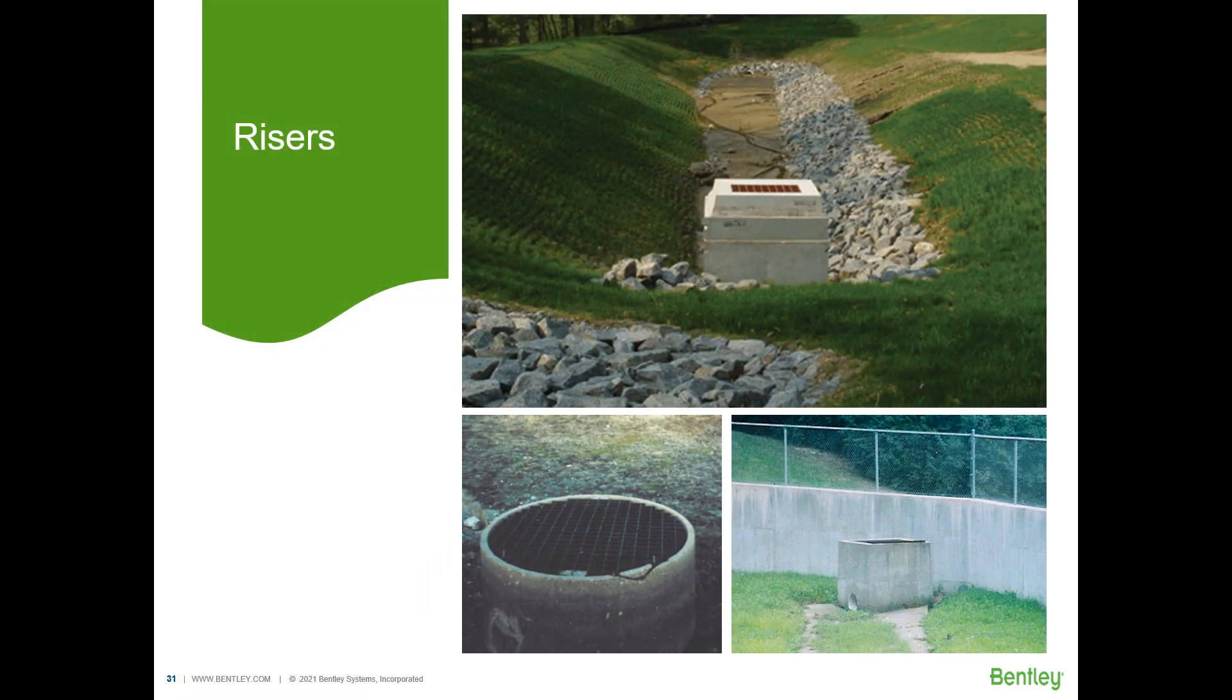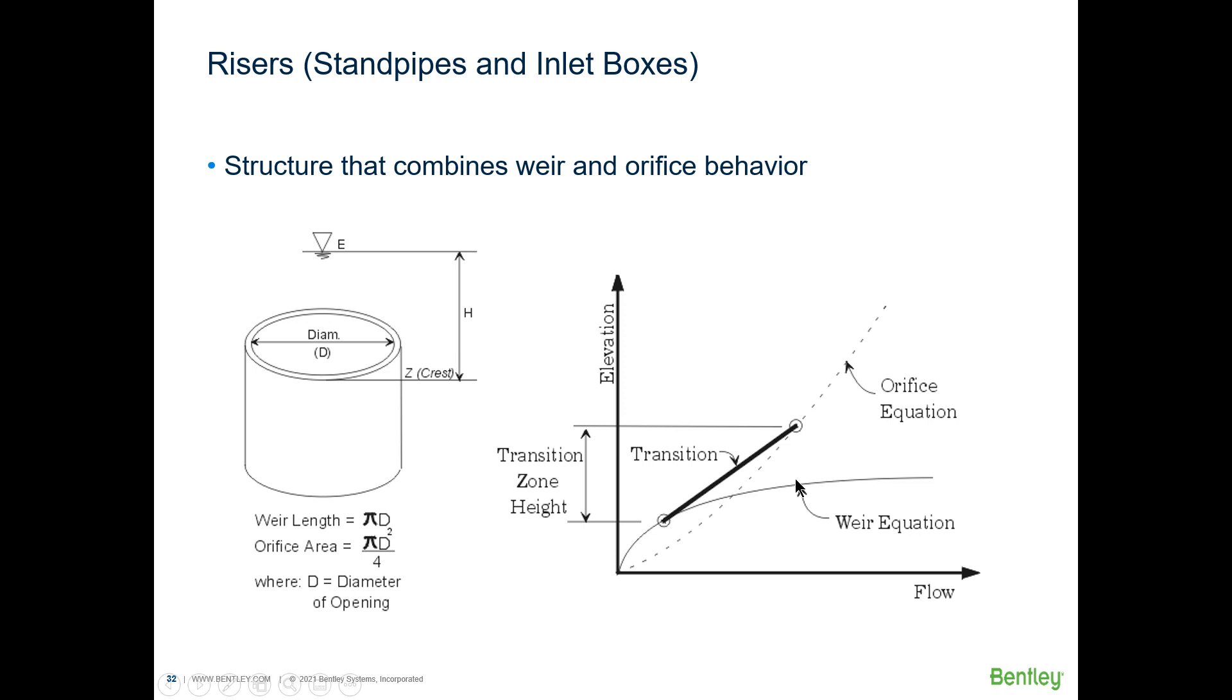Risers. Flow through a riser starts when the water level reaches the top of the structure. The top of the structure is also called an inlet and it behaves first as a weir. If you see the water is just slightly above it flows like a waterfall. But as the riser is fully submerged it starts acting as an orifice. So if you're going to think of the rating curve through a riser you can see that it first behaves as a weir, later as an orifice, and in between there's a transition zone.